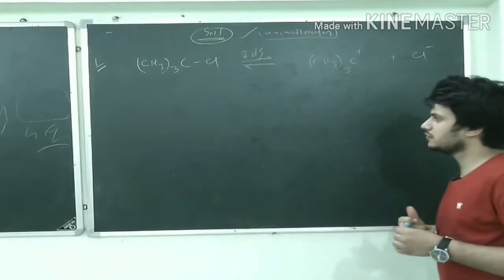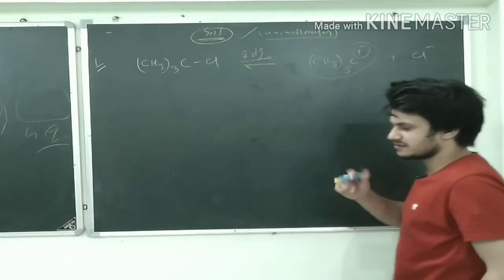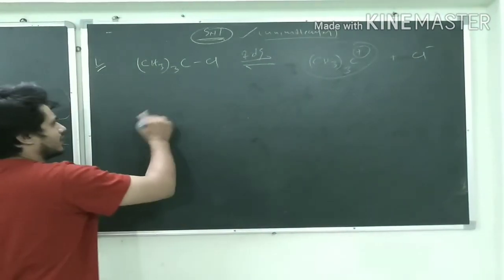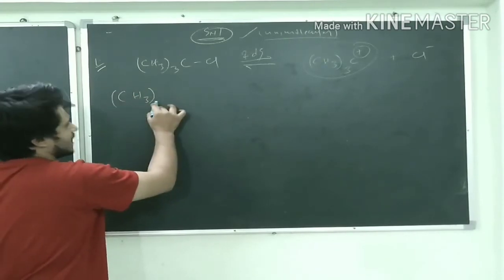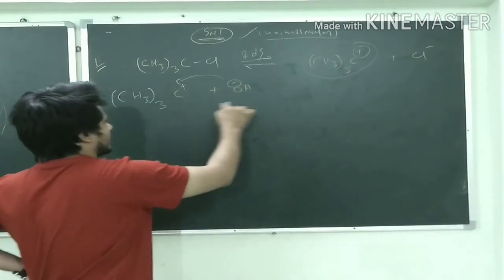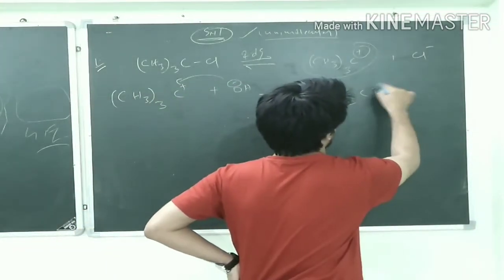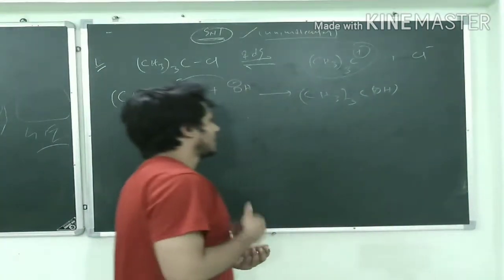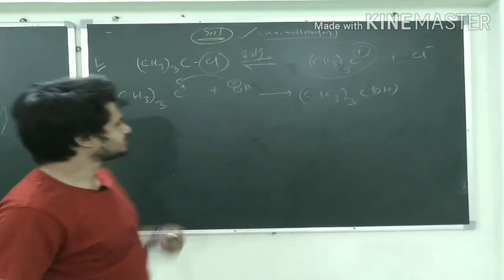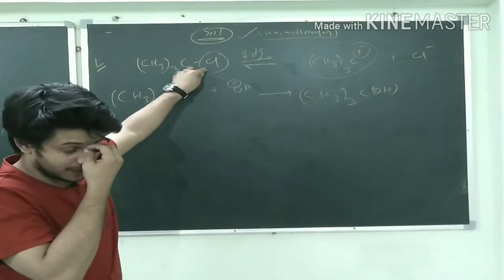And now this carbocation, any nucleophile can attack here very easily. So we had the nucleophile previously OH-, so let us have the nucleophile as OH- only. OH- is getting its attack here and it will make (CH3)3COH. So finally we are getting the alcohol only and it is a nucleophilic substitution type of product because you have a leaving group and finally you have nucleophile which is attacking and getting attached.